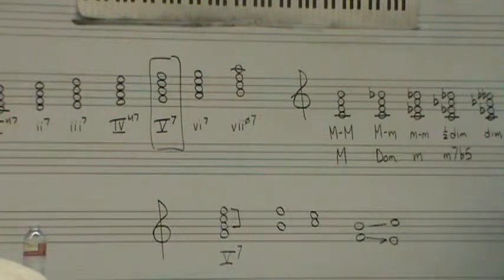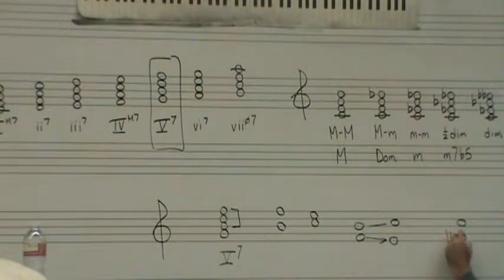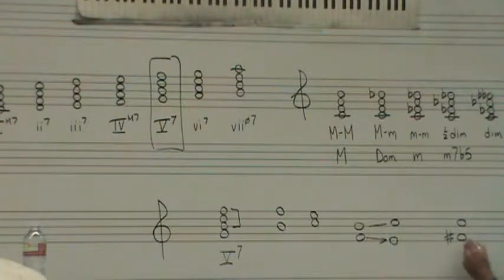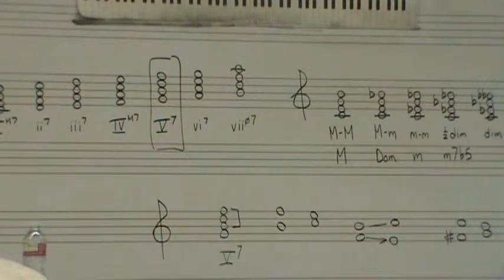That's why it's important in a harmonic context how you spell these tritones, especially, but any other interval. So let's take, for example, this tritone. If I spell it like that, then the F sharp is probably going to go up to the G, and the C is going to come down to the B.